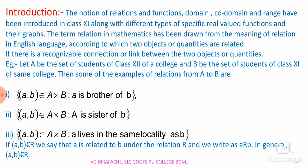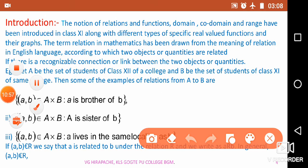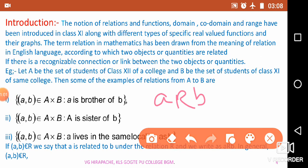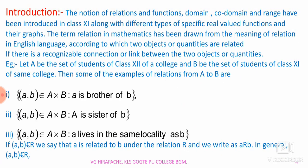If (a, b) belongs to capital R, we say that a is related to b under the relation R, and we write it as a R b. R can represent 'is a brother of', 'is a sister of', 'lives in the same locality', or any mathematical relation such as 'a is greater than b'. In general, (a, b) belongs to R.